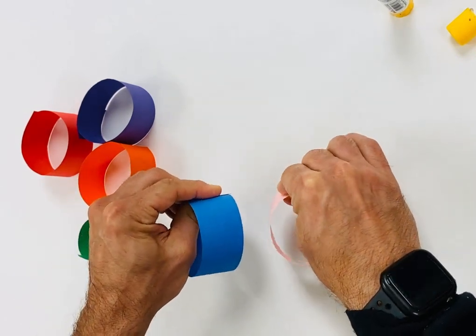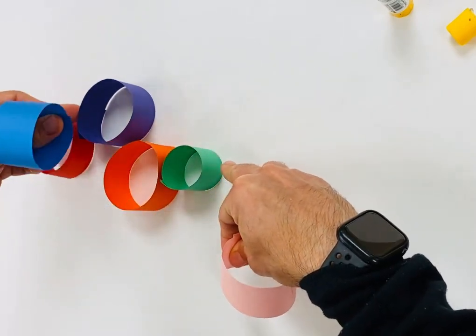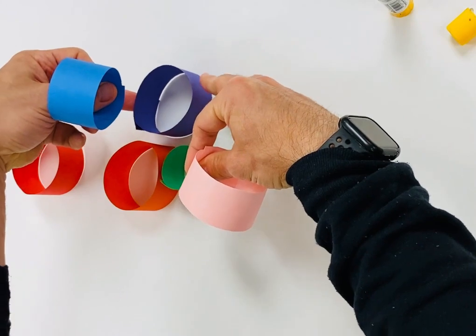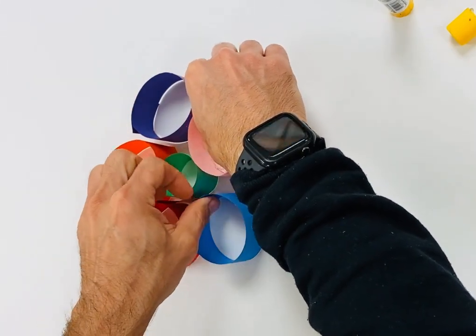Now while these are drying, I'm going to set up my flower with the small circle in the middle, and then the rest of the circles are going to go around the outside edge of that circle.